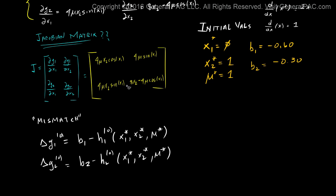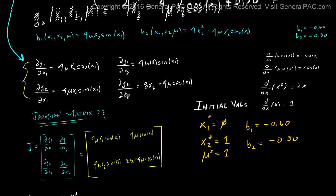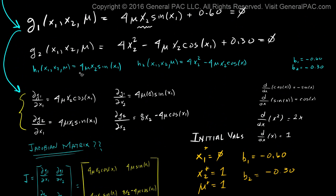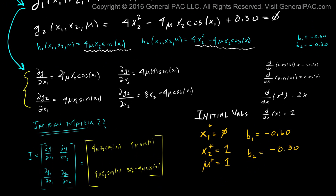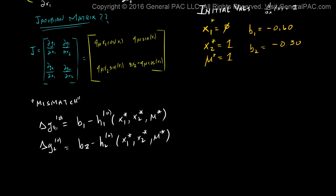h1 is simply equal to 4u·x2·sine(x1), and h2 is equal to 4x2² minus 4u·x2·cosine(x1). All we need to do is plug in our initial values into these two equations and we'll have our initial mismatch.